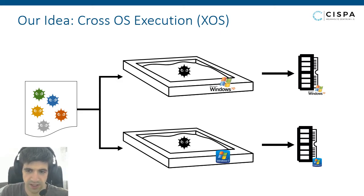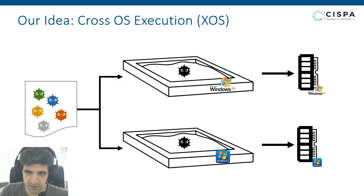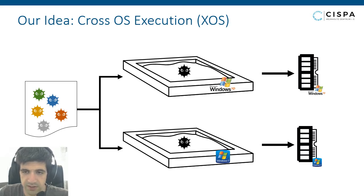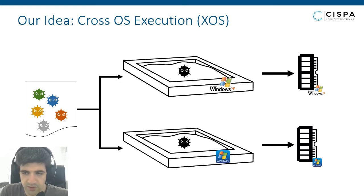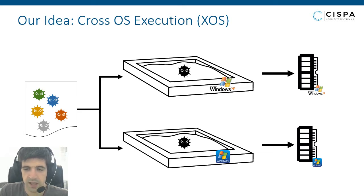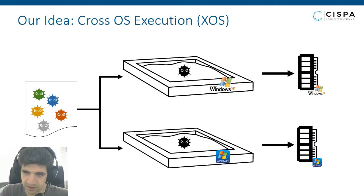We take a malware sample and execute it in two different machines — in particular, a Windows XP machine and a Windows 7 machine. Those are virtual machines with a predefined snapshot. We execute those and then take the memory dump of both systems. We now have two memory dumps that both have infected memory pages infected by the same malware.